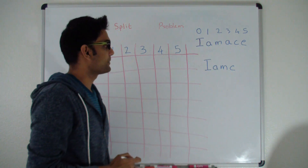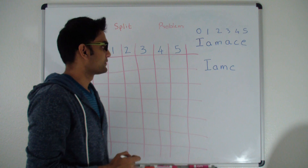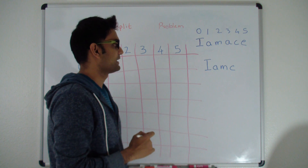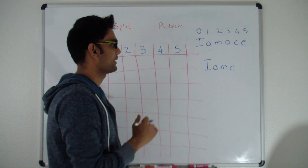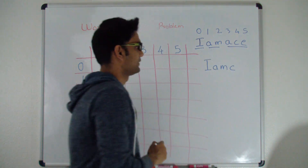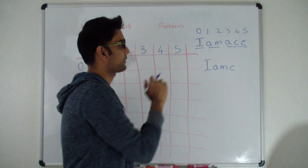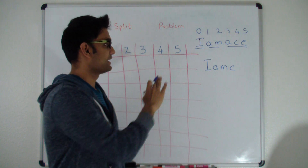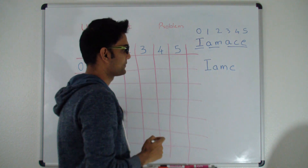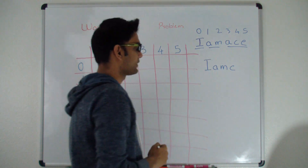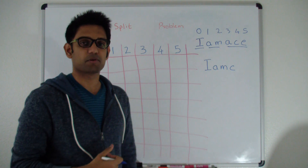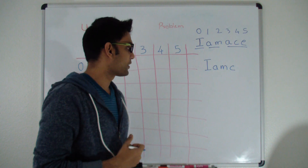I have a string I-M-A-M-A-C-E. You have to tell if the string can be split in some way such that each word belongs to a dictionary. This should return true because you can split it into three words and all the words belong in the dictionary. Let's look at another string I-M-C — this will return false because you cannot split it into multiple words such that each word belongs in the dictionary.